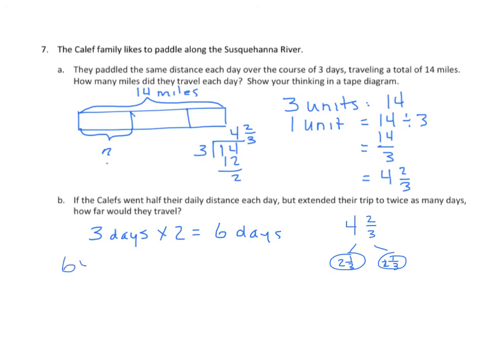They're going to travel 2 and 1 third miles a day for 6 days. So we have 6 times 2 and 1 third. That equals 2 and 1 third repeatedly added 6 times. We can find the sum of the whole numbers. We have 6 twos, that's 12, plus how many thirds? We have 6 thirds. 12 plus 6 thirds is 12 plus 2 equals 14. They travel 14 miles if they travel twice as many days half the distance. You can see that they travel the identical distance that they did in Part A of this problem.